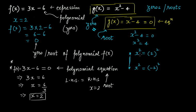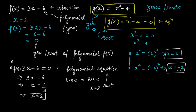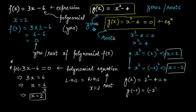So x squared equal to 2 squared means x equal to 2, and x squared equal to minus 2 squared means x equal to minus 2. Therefore, this polynomial equation has two roots: x equal to 2 and x equal to minus 2. This polynomial has two zeros: x equal to 2 and x equal to minus 2. That is, g(2) = 2 squared minus 4 equals 0, and g(minus 2) = minus 2 whole squared minus 4 equals 0.